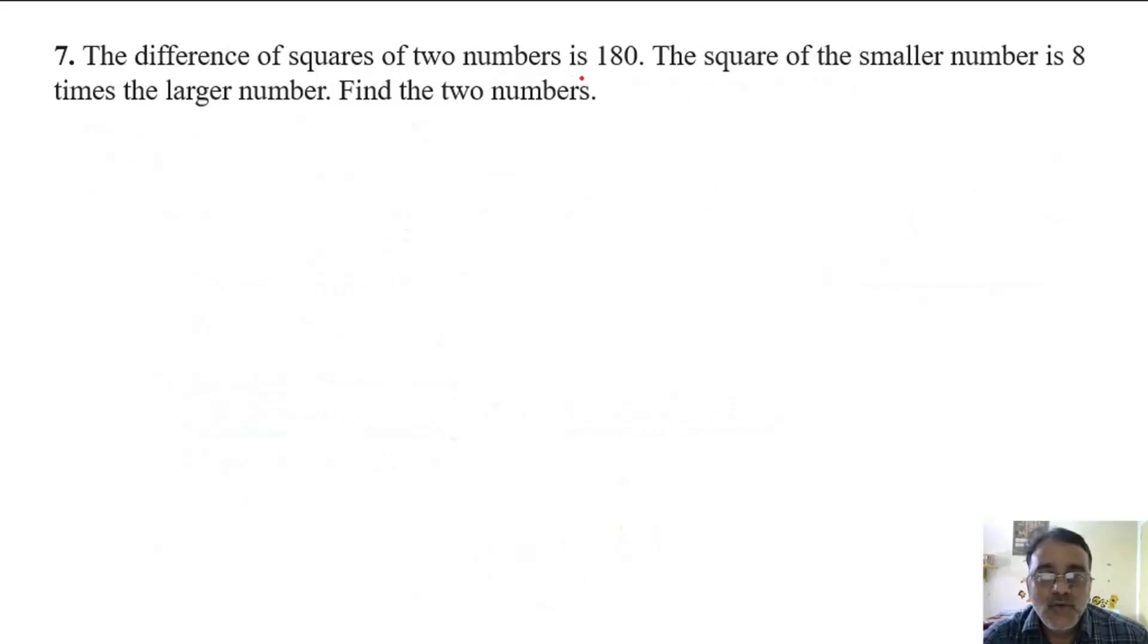The difference of squares of two numbers is 180 and the square of the smaller number is 8 times the larger number. Find the two numbers.